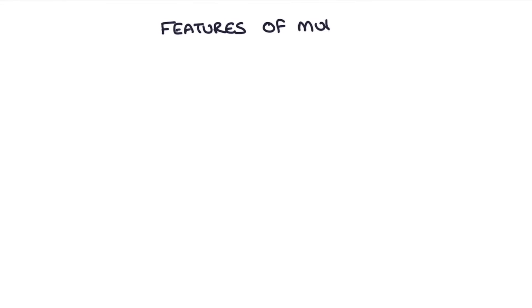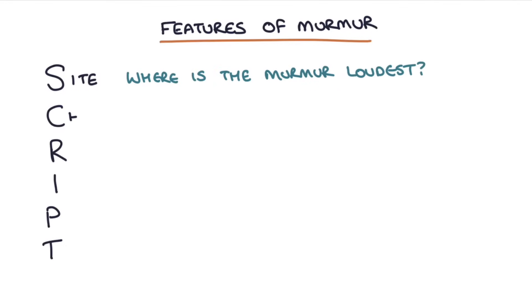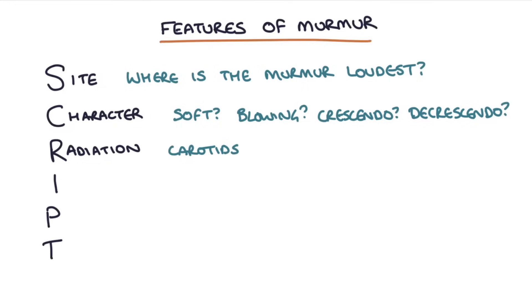There's a few features of a murmur that you can assess, and we use a mnemonic called SCRIPT. S is for site, meaning where is the murmur loudest. C is for character, so is it soft, blowing, crescendo, meaning getting louder, decrescendo, meaning getting quieter, or crescendo-decrescendo, meaning getting louder and then quieter. R is for radiation, so can you hear this murmur going to the carotids, as you would in aortic stenosis, or going to the left axilla, as you would in mitral regurgitation.